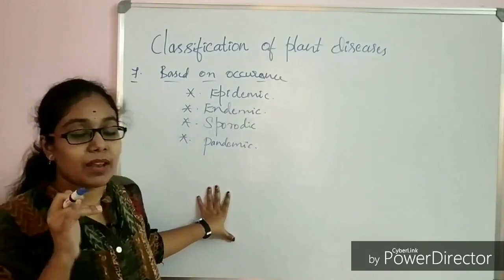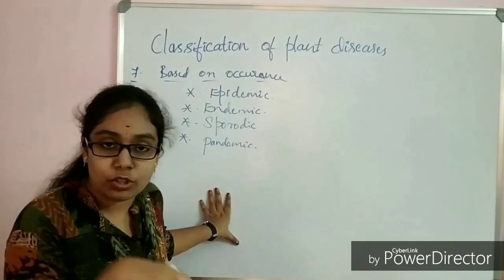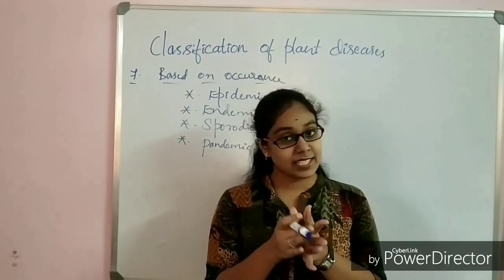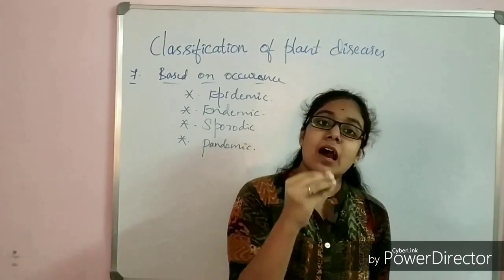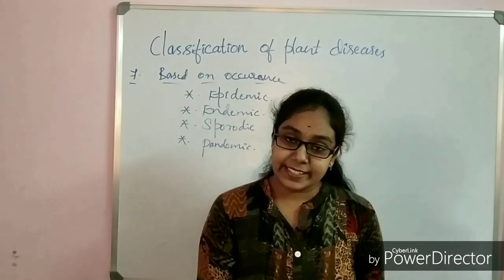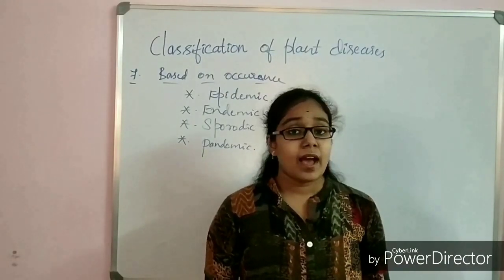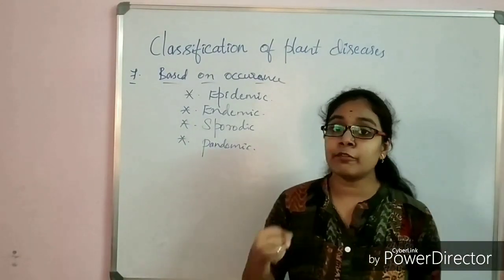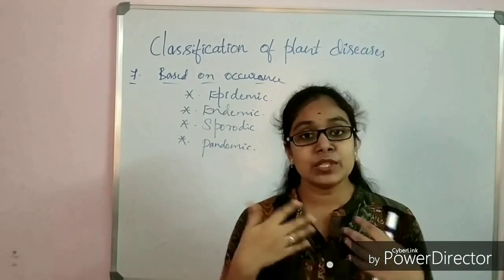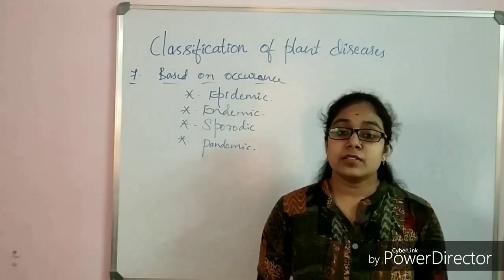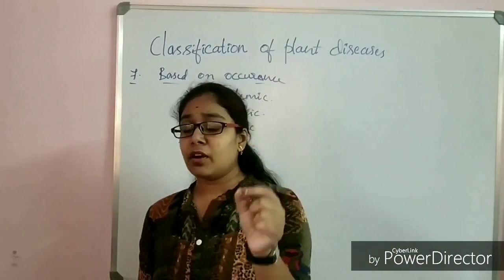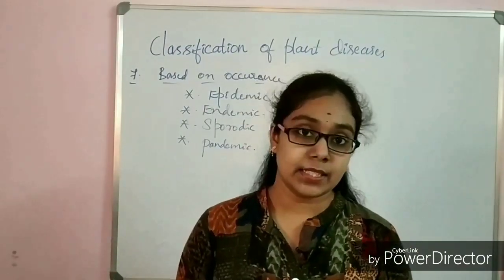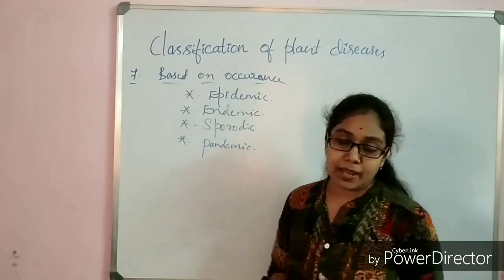Epidemic plant diseases are the type of diseases in which the diseases are present more or less constantly year to year. The infection consistency of epidemic diseases is from moderate to severe, and this type of disease is seen only in a particular geographical area — it may be one country, one district, or one locality.